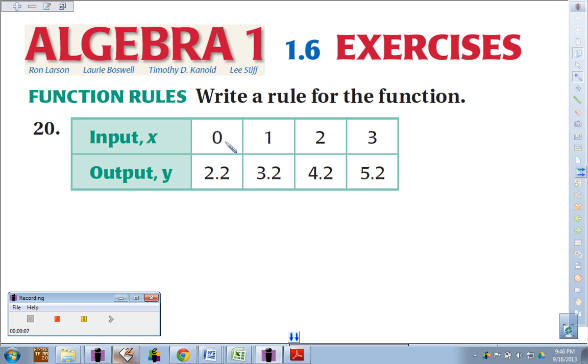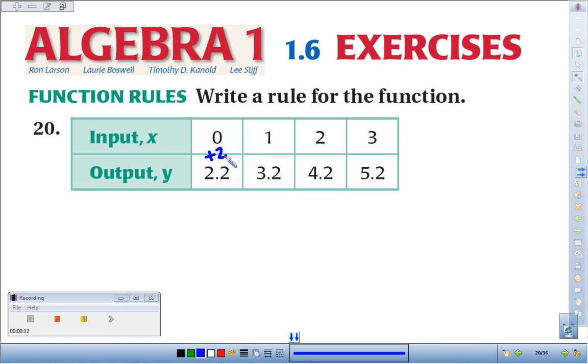In each case, we notice to go from 0 to 2.2, I add 2.2. To go from 1 to 3.2, I add—that's a plus sign—2.2. To go from 2 to 4.2, I add 2.2, and same thing from 3 to 5.2, we have to add 2.2.